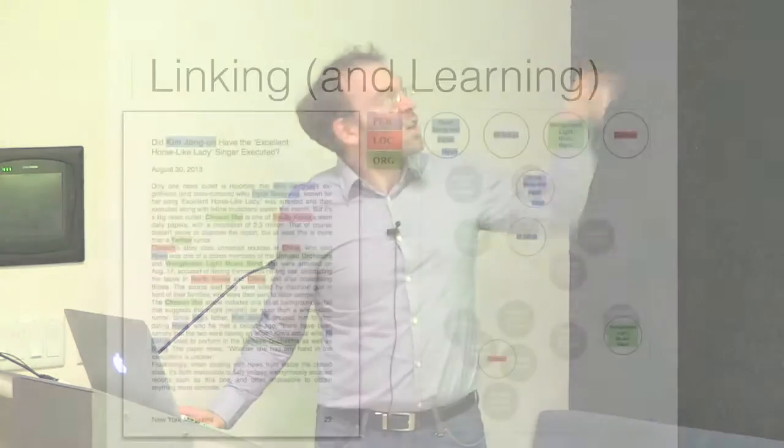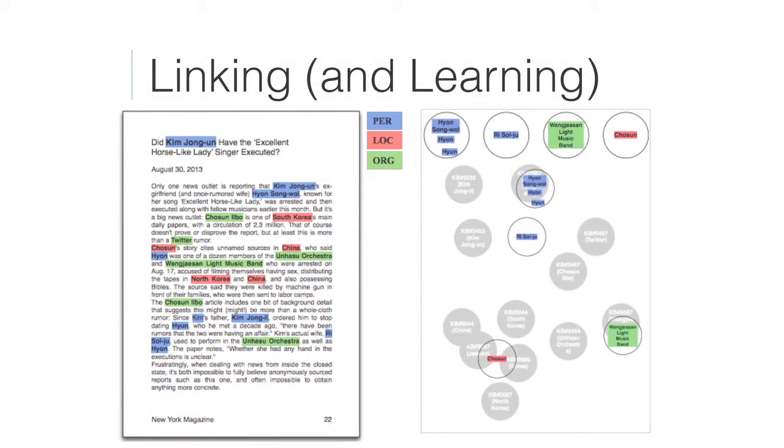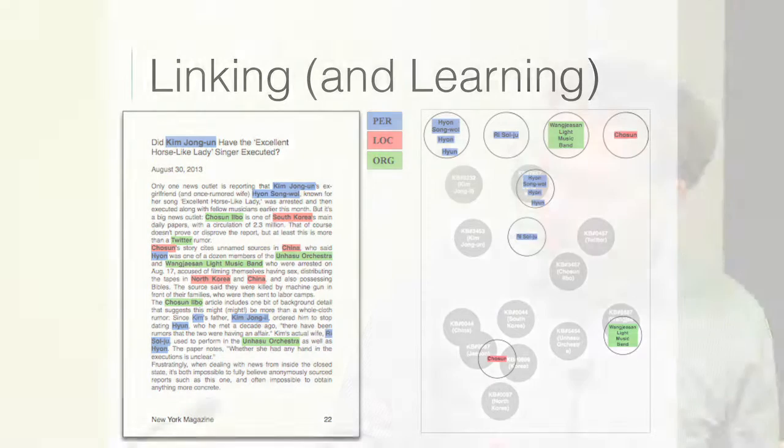At right is essentially the projection into that space, and you can see these things that are about Korea. This article is about the leader of North Korea supposedly having his ex-girlfriend murdered because his wife didn't like her. You've got lots of names — some familiar like Kim Jong-un, some less so like Hyun Sung-wal — plus the newspaper Chosin Ilbo. This is standard named entity extraction, and it's fairly easy here because the text is nicely capitalized.